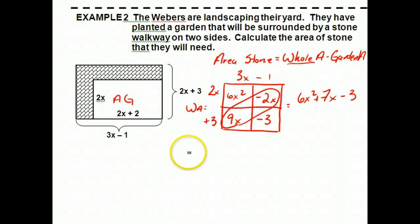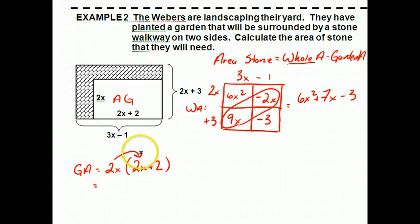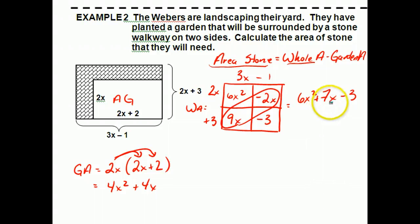Now let's find the garden area. Here I don't have two binomials, so I don't need the full box method. The garden area equals two x times (two x plus two), and using the distributive property that gives four x squared plus four x. Now we can apply both results to our formula: area of stone equals the whole area minus the garden area.